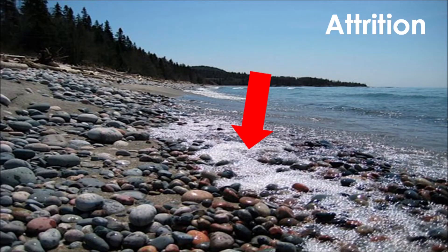Our third type of coastal erosion is known as attrition. Attrition is when eroded particles in the water smash into each other and break into smaller fragments. This is why you will often see pebbles or shingle along your shoreline with rounded edges — attrition is this constant smashing and rubbing together of particles, creating those lovely rounded edges.